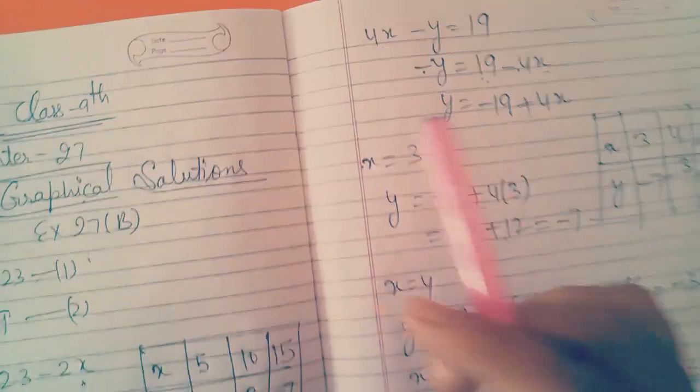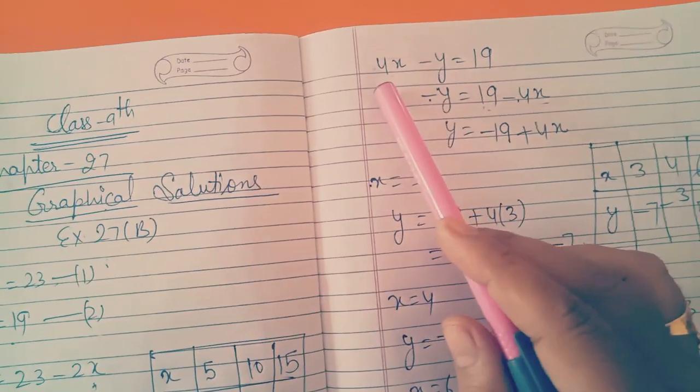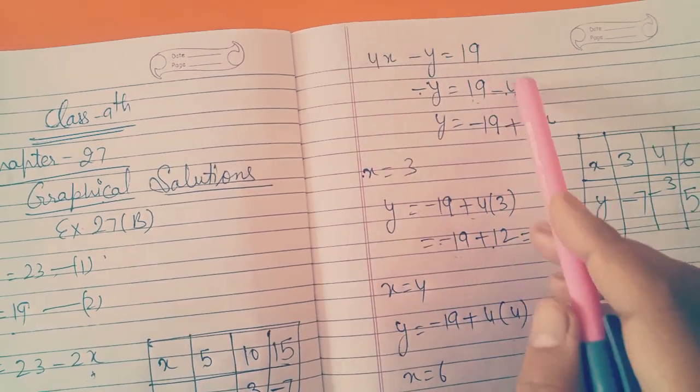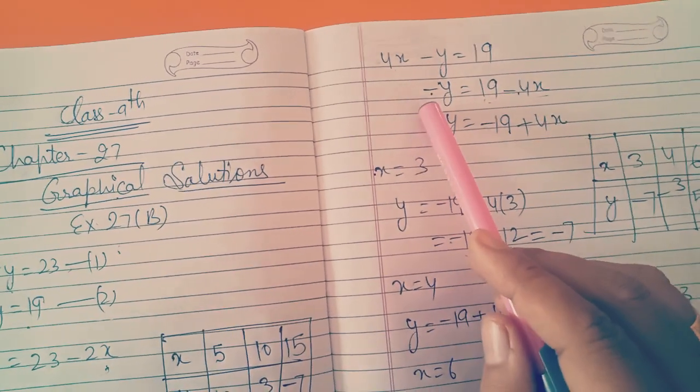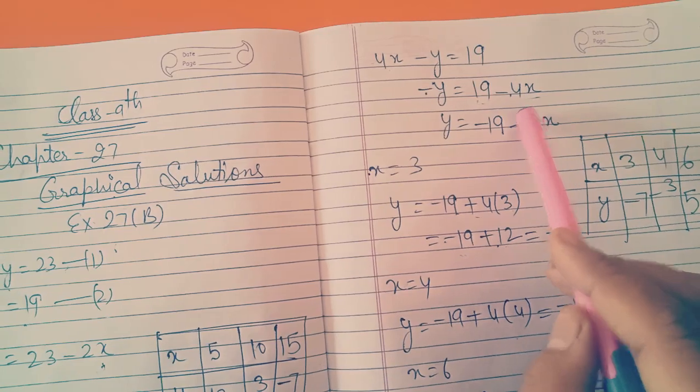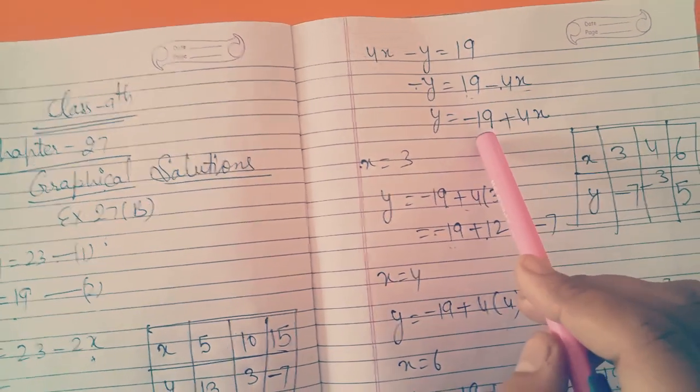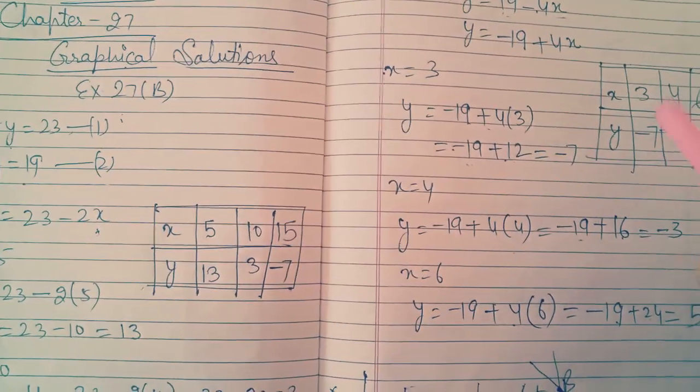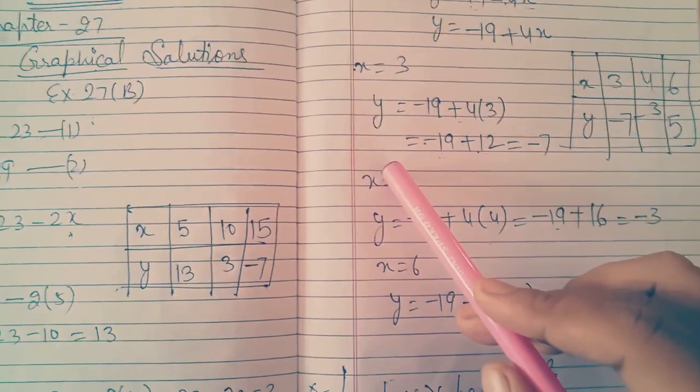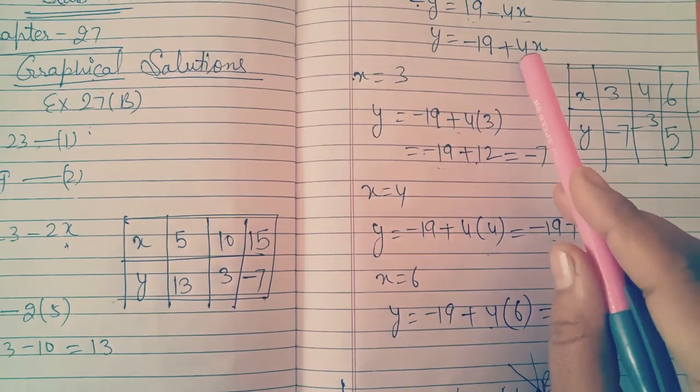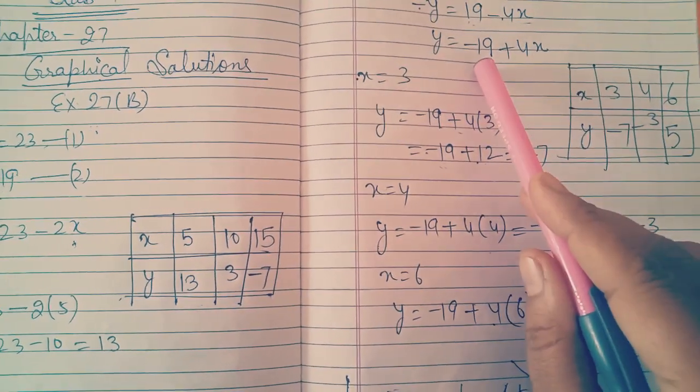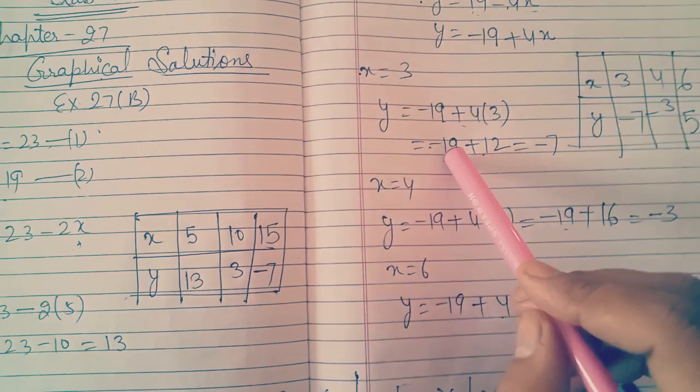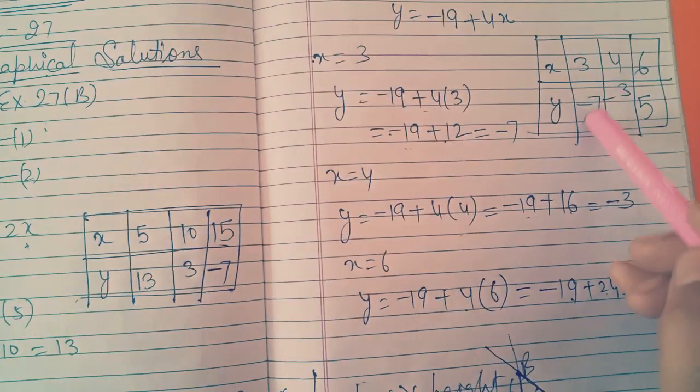Then second equation: 4x minus y is equal to 19. Here I will make y independent and x will be dependent. So 4x will be shifted to the right hand side. And also I will solve this minus sign, shift this to right hand side. 19 becomes negative and this will become positive. So here I will put three values of x and then we will find the value of y. Suppose I put here 3, it will be multiplied with 4 then subtracted from 19. So 4 into 3 is 12, 19 minus 12 will give 7. 19 is bigger number, so answer will be negative.